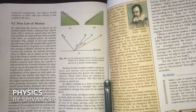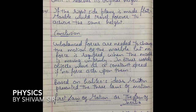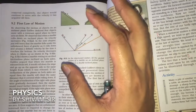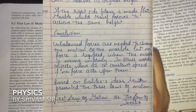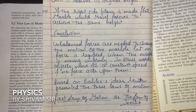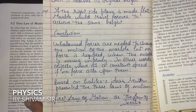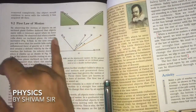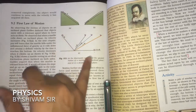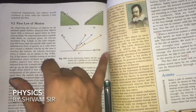The conclusions from Galileo's experiment: unbalanced forces are needed to change the motion of the marble. In other words, objects move at a constant speed if no force acts upon them. If no force is applied on the marble, it keeps going straight until it reaches the same height from which it was released. If the surface is frictionless, it will go on forever.